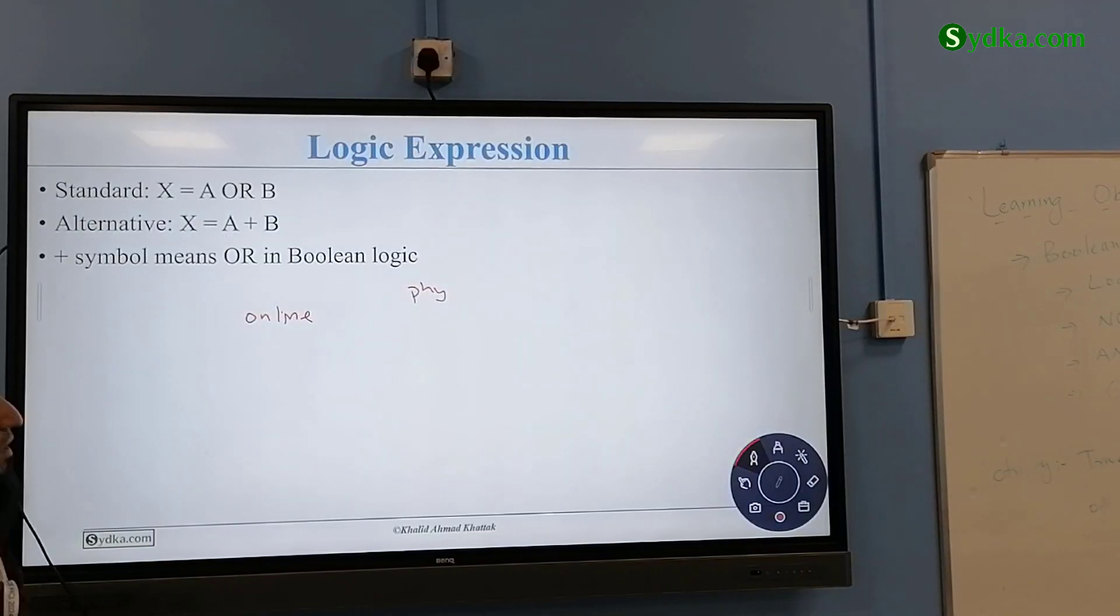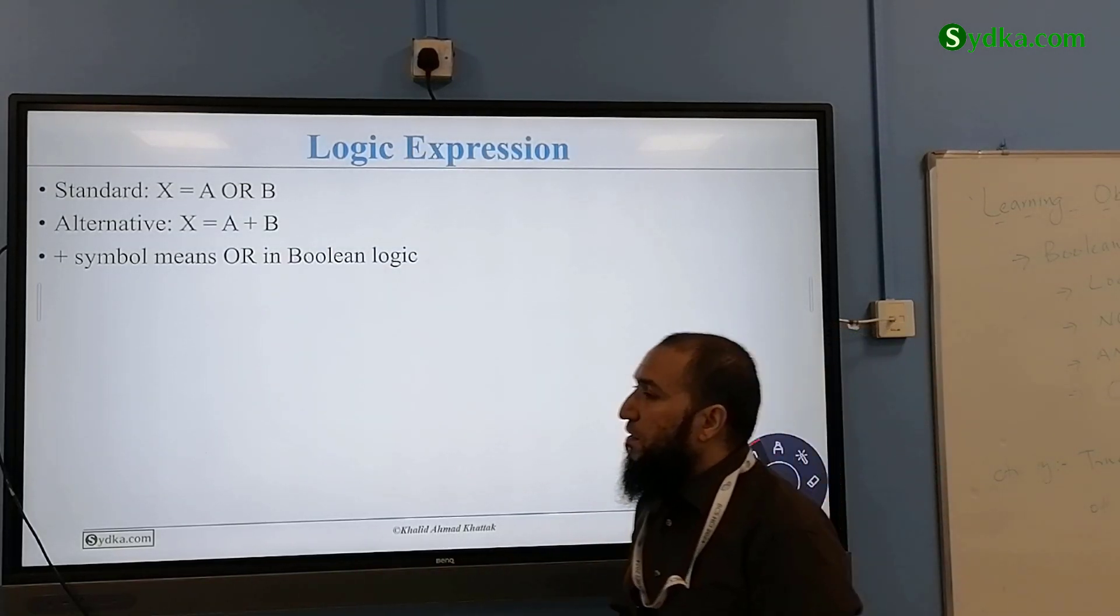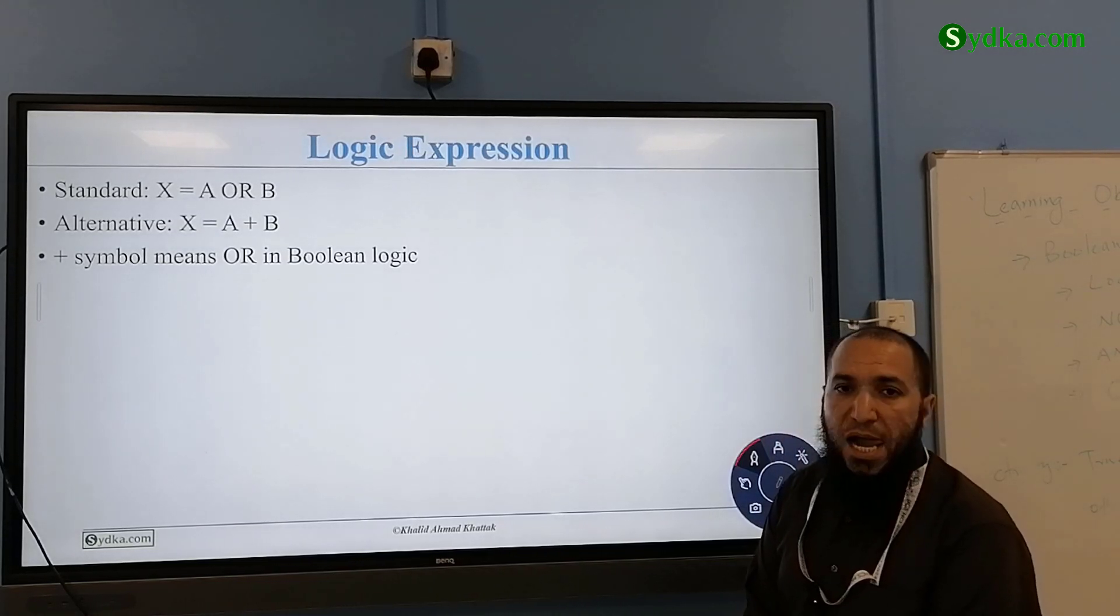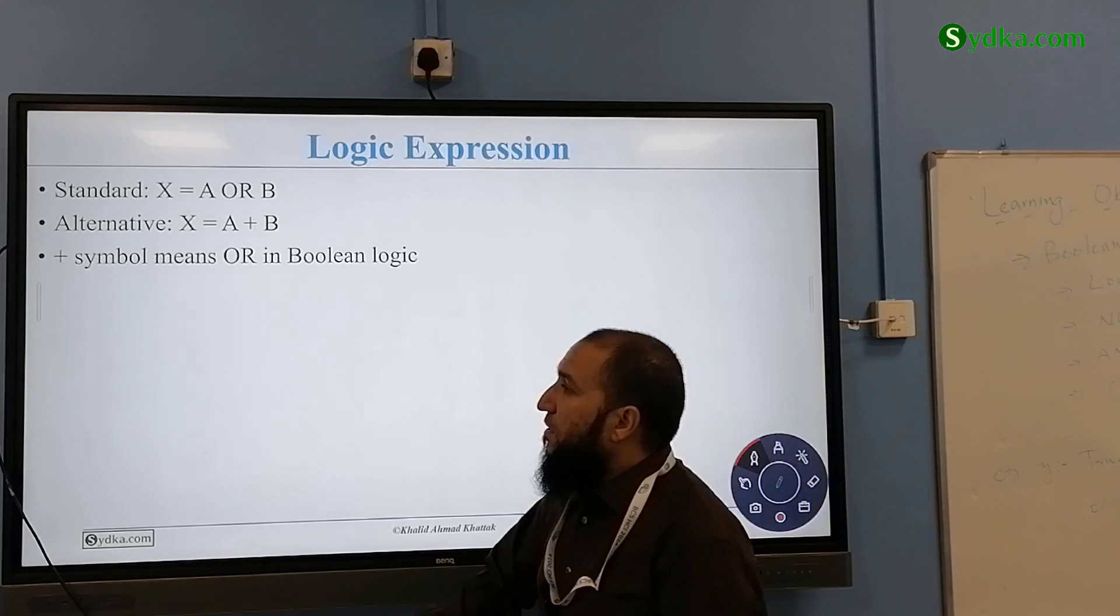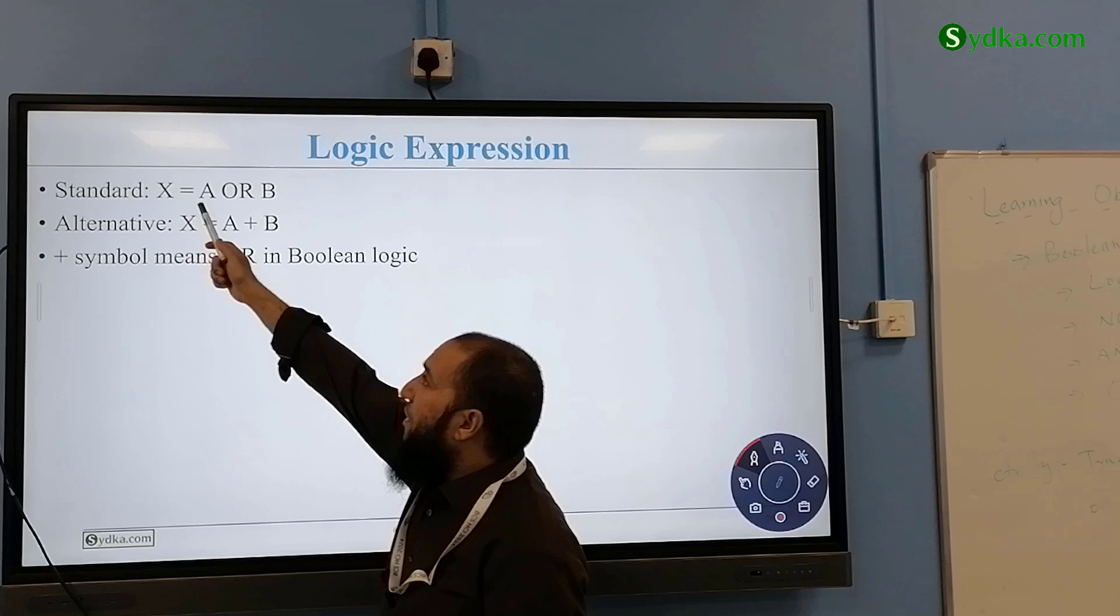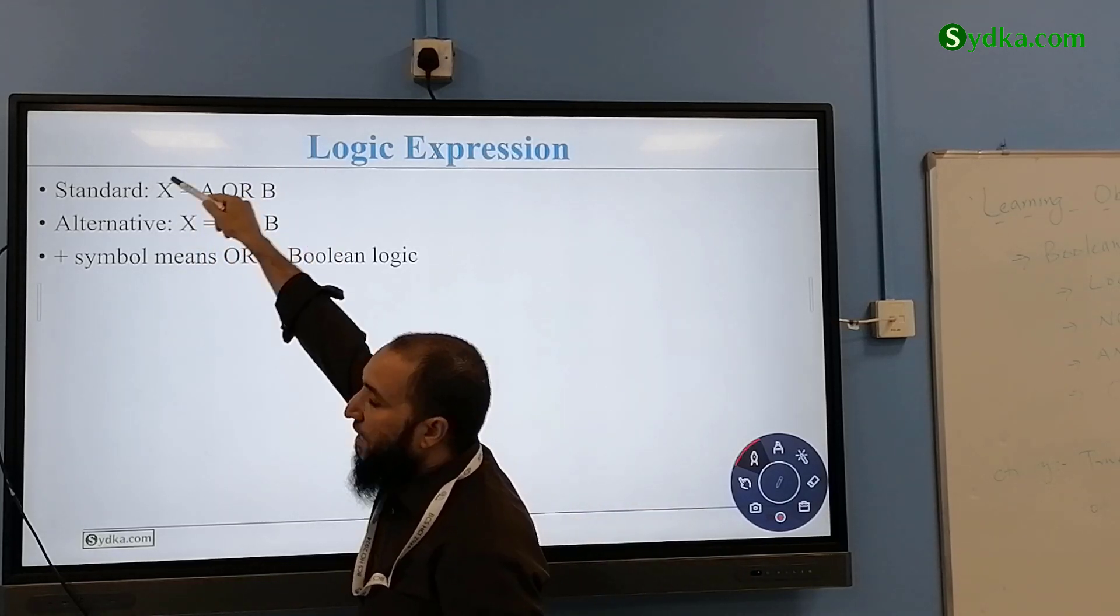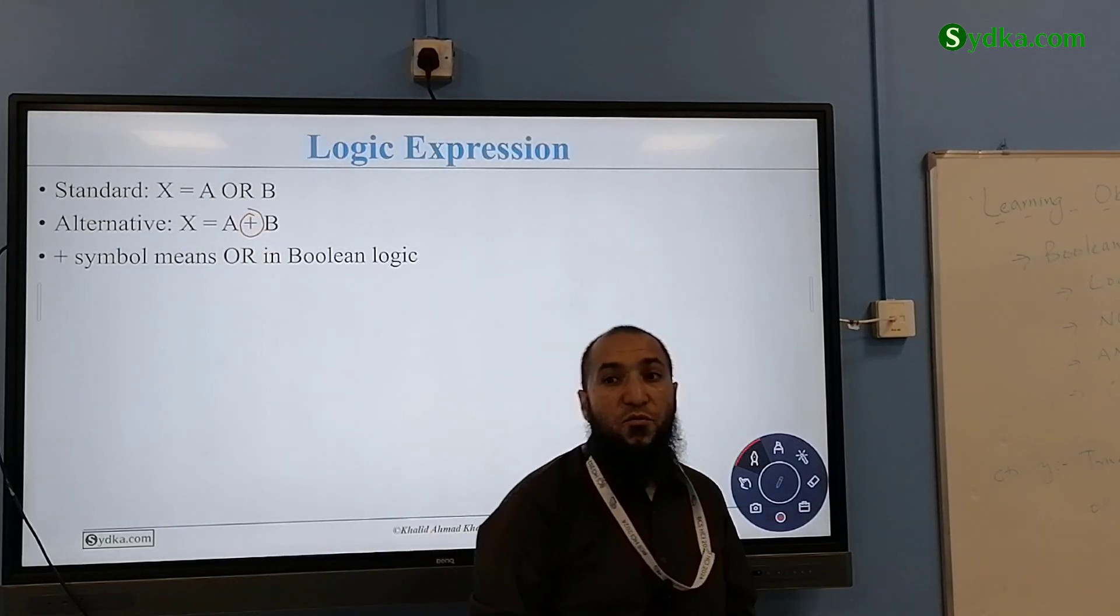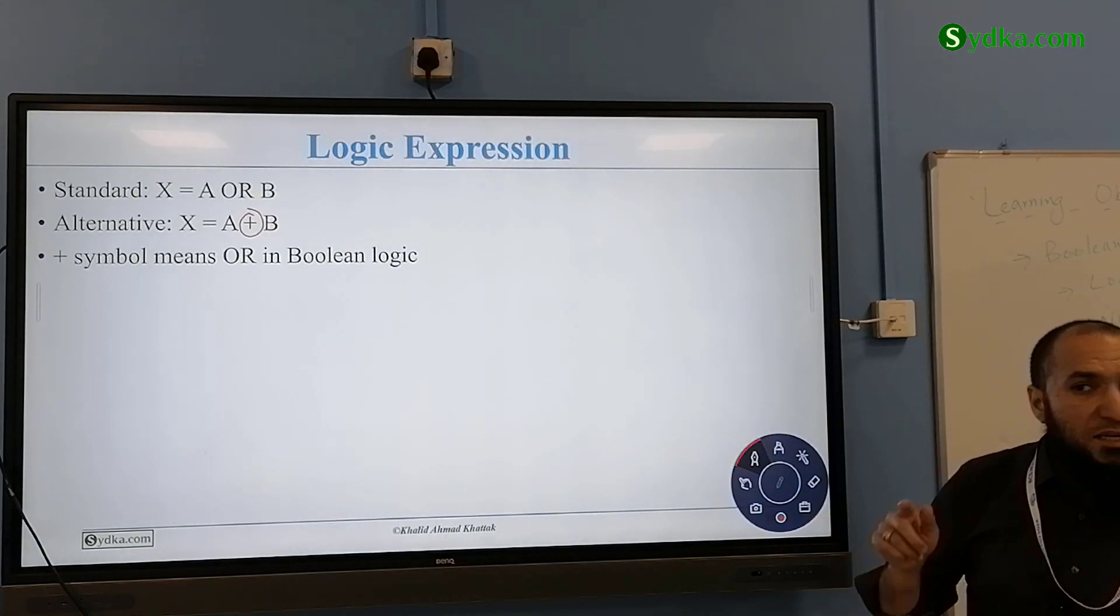The trick for this one is, just simple, and one of them has to be true. Zeroes and ones. Okay, now, yes, it is, by the way, true or false. Standard, we have X is equal to A or B, whatever the value is, we assign this to X. Alternative is, now we use the plus sign for OR gate. What was the sign for AND gate? Dot. Dot, okay?